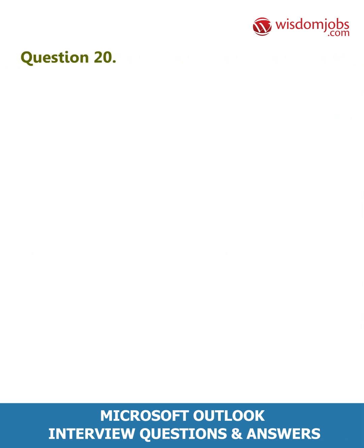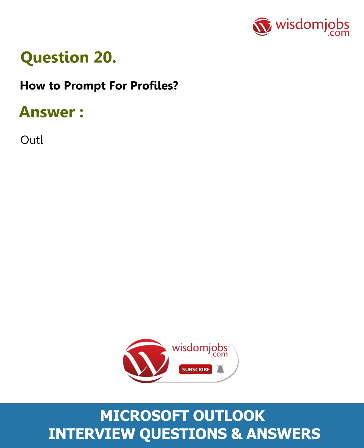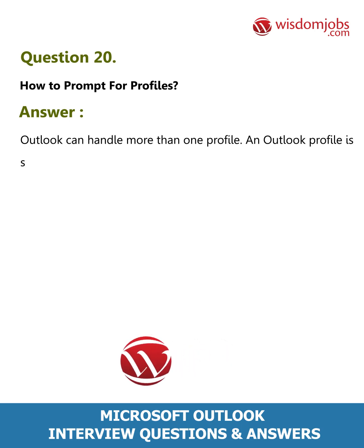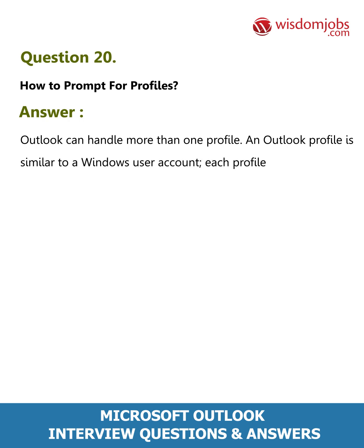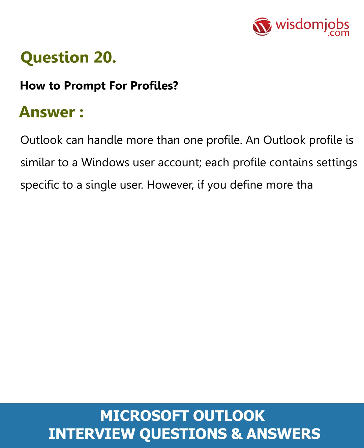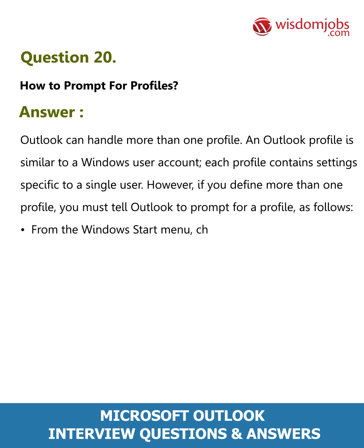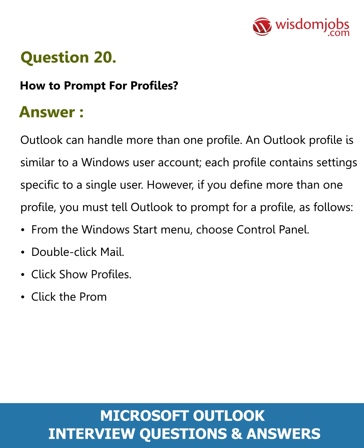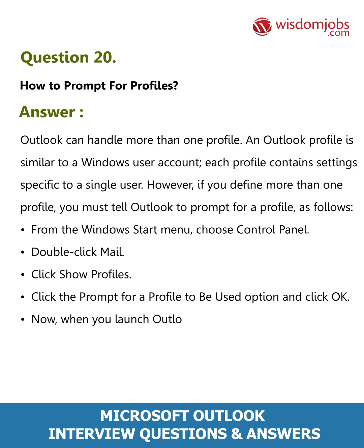Question 20: How to prompt for profiles. Answer: Outlook can handle more than one profile. An Outlook profile is similar to a Windows user account — each profile contains settings specific to a single user. If you define more than one profile, you must tell Outlook to prompt for a profile. From the Windows Start menu, choose Control Panel, double-click Mail, click Show Profiles, click the 'Prompt for a profile to be used' option, and click OK. Now when you launch Outlook, it will ask you to choose a profile.